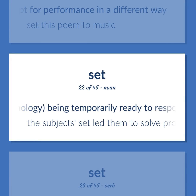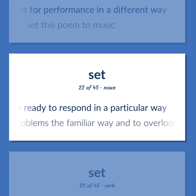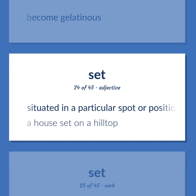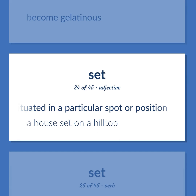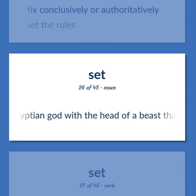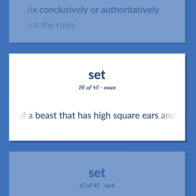SET: Psychology: being temporarily ready to respond in a particular way — the subject set led them to solve problems the familiar way and to overlook the simpler solution. Become gelatinous. Situated in a particular spot or position — a house set on a hilltop. Fix conclusively or authoritatively — set the rules. Evil Egyptian god with the head of a beast that has high square ears and a long snout — brother and murderer of Osiris.